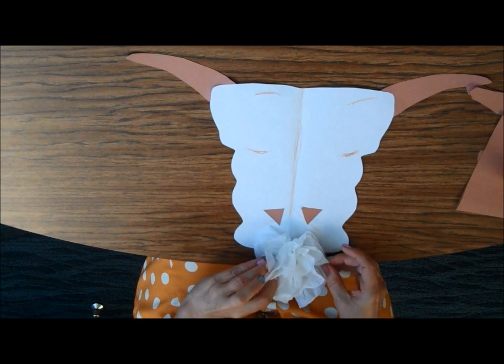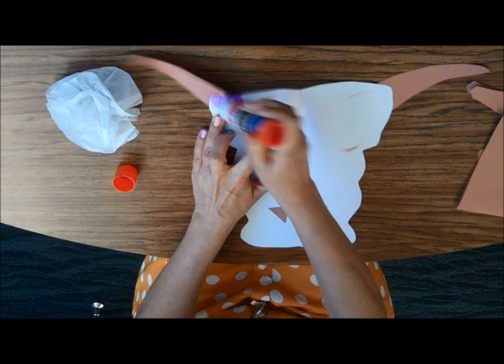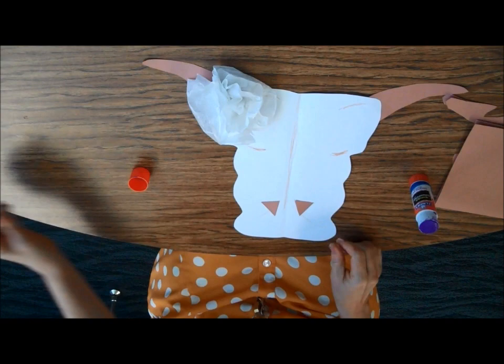And then when I get done, I glue it where I want it. I either glue it here, here, or here. I think I'm going to glue it up here. So you can use a glue stick or a white glue. And you just glue on your flower.